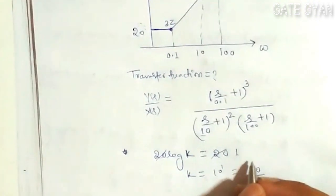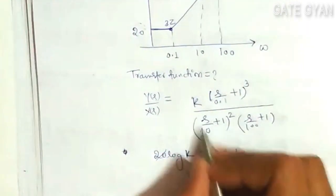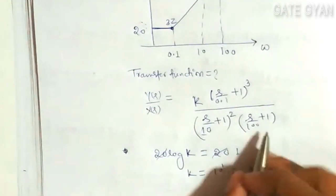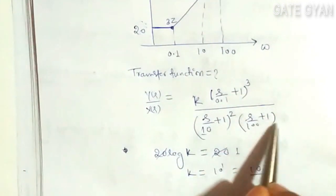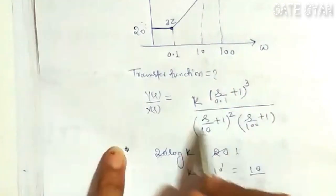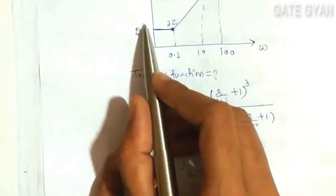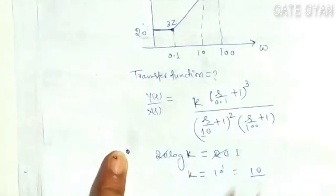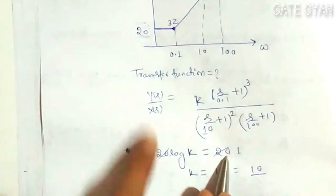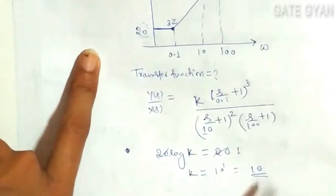So, transfer function is in the form of K into (s/0.1 + 1) cube, (s/10 + 1) square, and (s/100 + 1). I will get all this from this Bode magnitude plot. And K I will get from this point, which is given as 20 log K is equal to 20 dB. It is in dB. So, I will get my K as 10.